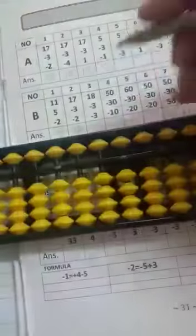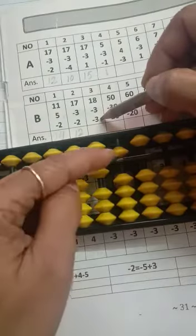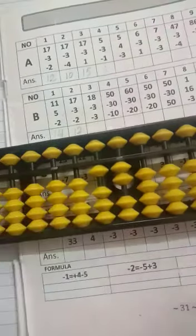So now I am doing the third one. This is 18 minus 3. Do we have minus 3? No. Minus 3 ki formula: minus 5, add 2. Answer is 12.